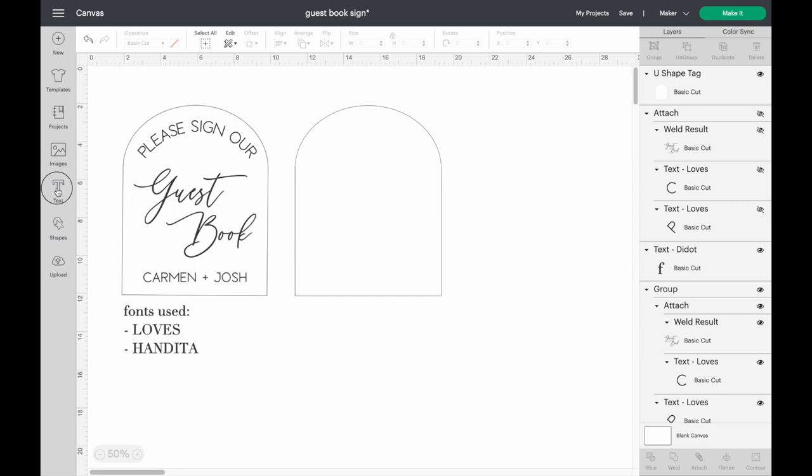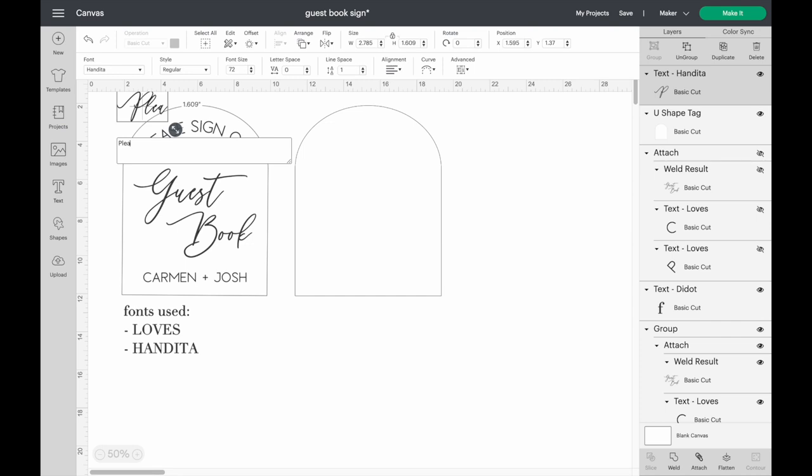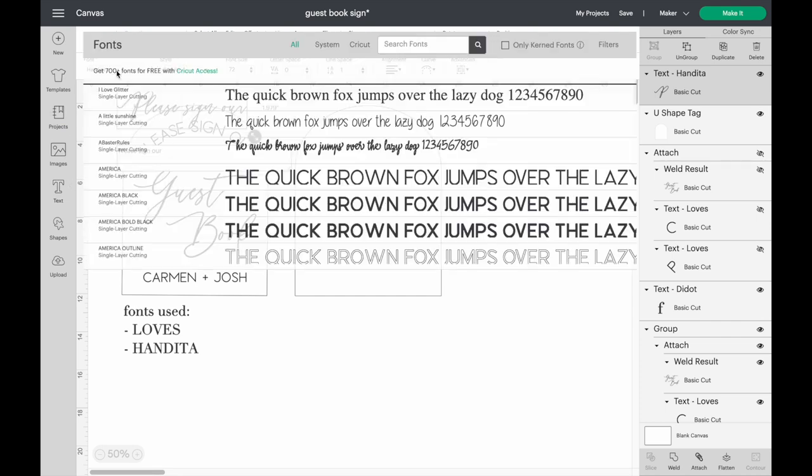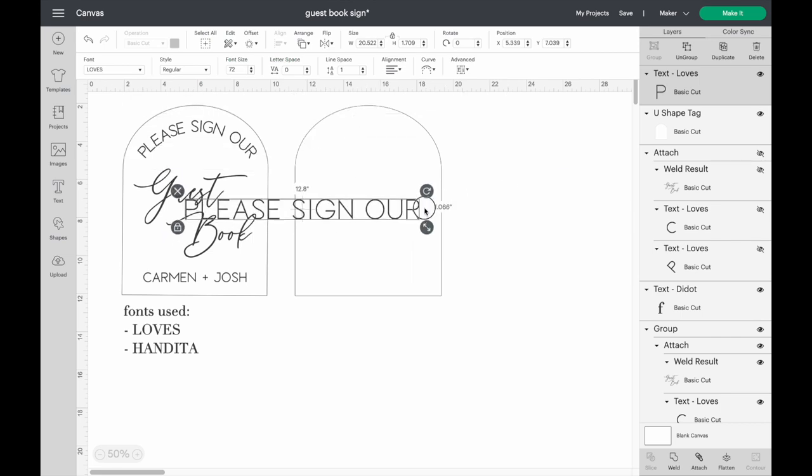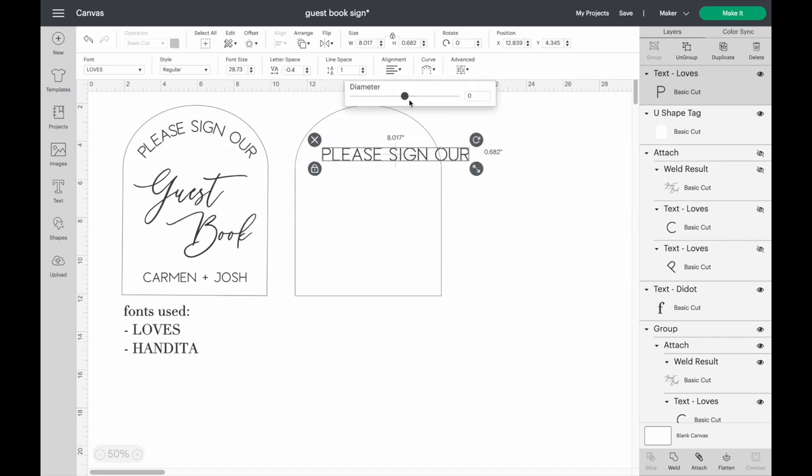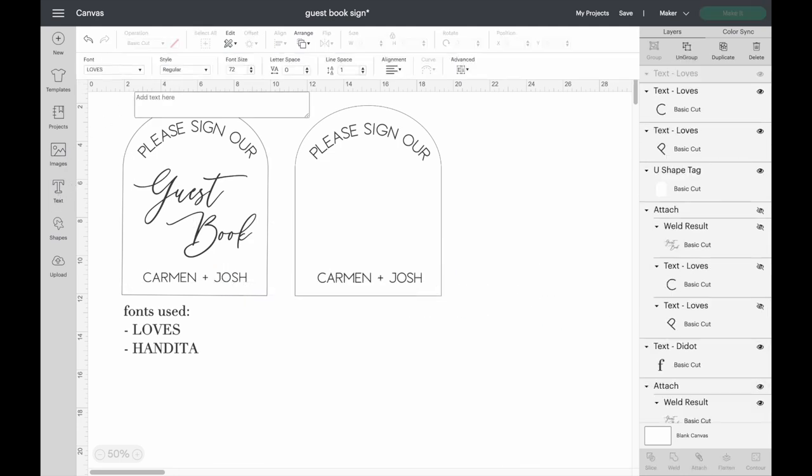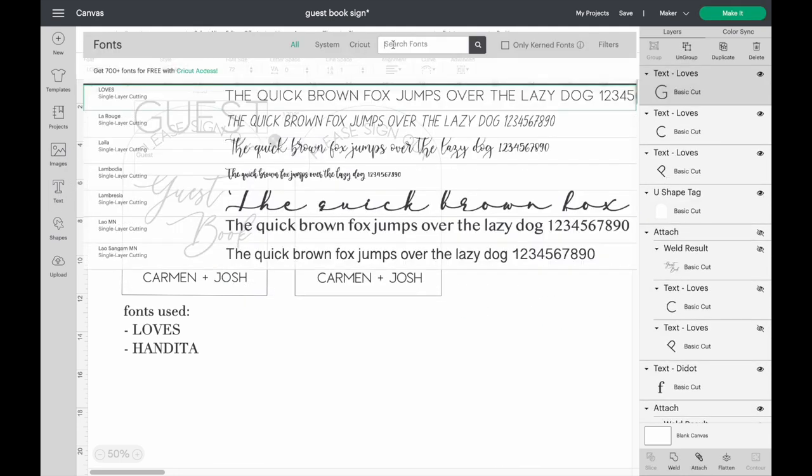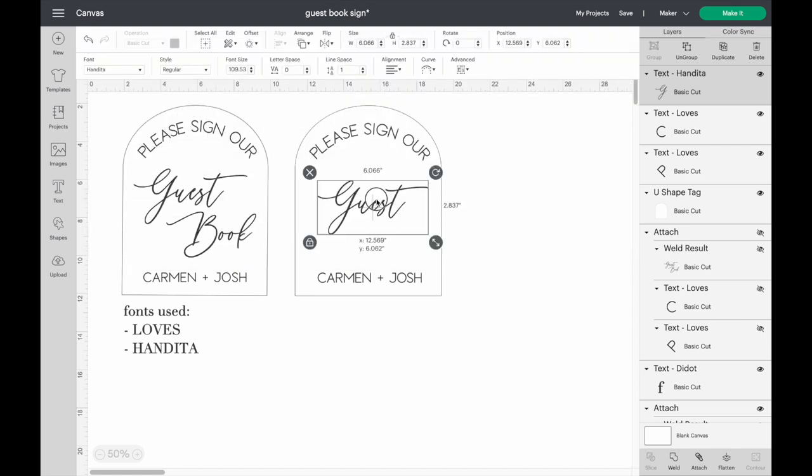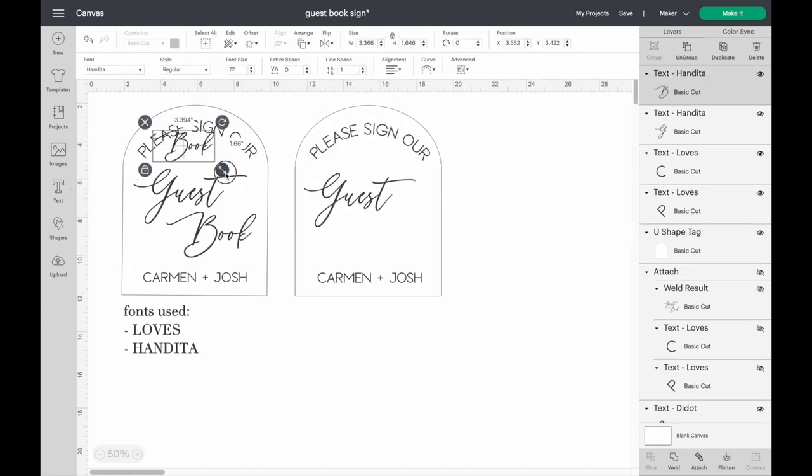So this is going to represent our 8 by 10 arch. Now we're going to go ahead and work on the design. First we're going to start with the please sign our portion. The font used for this is called Loves. We are going to pull these letters together just a little bit. Now we're going to do the curve here. We're going to add the names to the bottom using this same font. Now we're going to do the guest book portion. For this one I used the font called Handita, and I typed these two words separately.